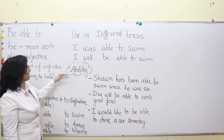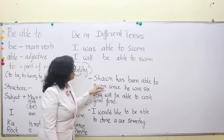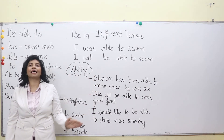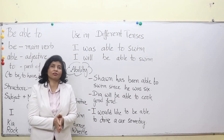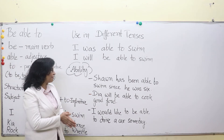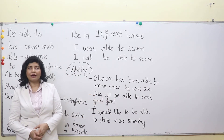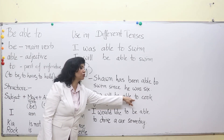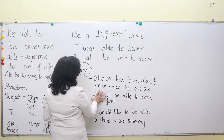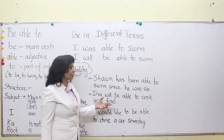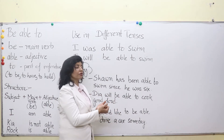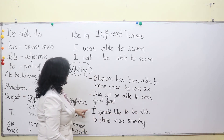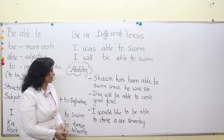It shows your ability. For example: 'Sean has been able to swim since he was 6.' That means when he was 6 he started swimming, and since then he has been swimming continuously — he can swim very well. Another example: 'Diyah will be able to cook good food.' That means Diyah is learning to cook and she will be able to cook good food in the future. Here, 'will be' is the main verb form, 'able' is the adjective, 'to cook' is the infinitive, and 'good food' is the object.